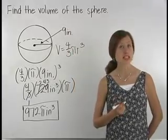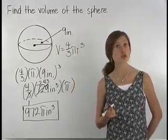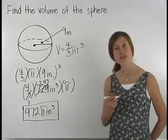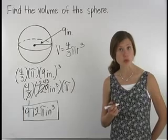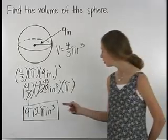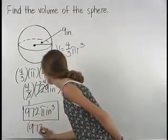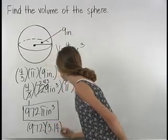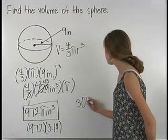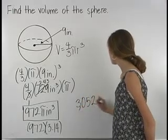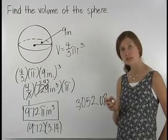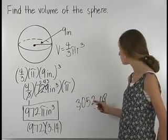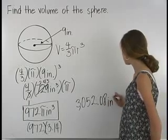Remember that pi is approximately equal to 22 sevenths, or 3.14. So we can estimate the value of the volume by plugging in 3.14 for pi. So we have 972 times 3.14, which is equal to 3052.08, which means that the volume is approximately equal to 3052.08 inches cubed.